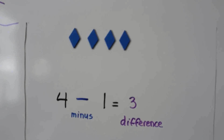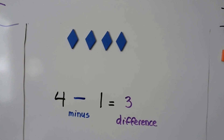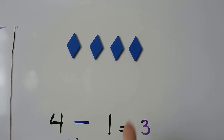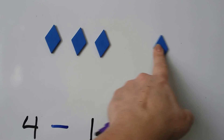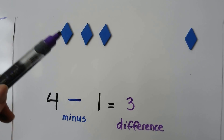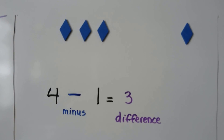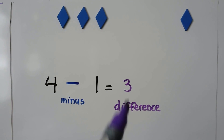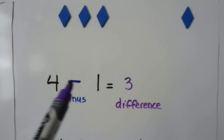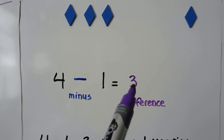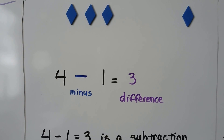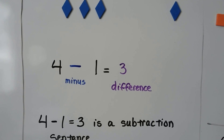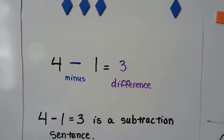Four minus one equals three. If we have four blue diamonds and we take one away, now we have one, two, three. Four minus one equals three. This is a minus sign — it means we're taking away. The answer is called the difference. Four minus one equals three is a subtraction sentence, a subtraction equation.